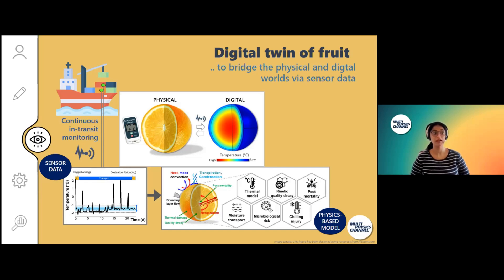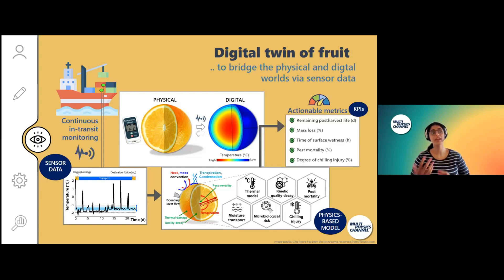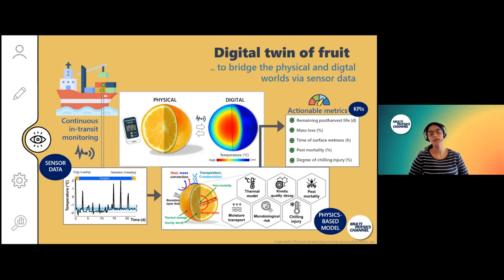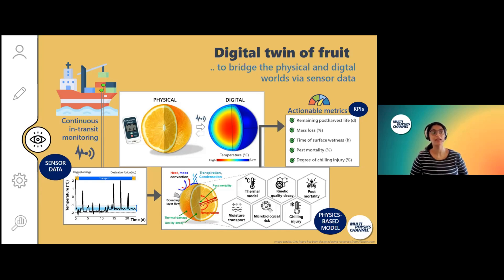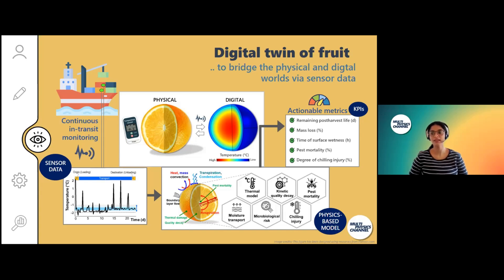All this sensor data is fed into a physics-driven model similar to the one shown here. This creates a digital twin, which is basically a virtual representation of a real fruit that behaves the same way — thermally, physiologically, and so on. This can then provide us with quantitative metrics or KPIs we can actually work with, directly translating commercially measured sensor data into actionable metrics. Importantly, a digital twin is not just a simple physics-based model, but is also linked to the real product by sensor data.